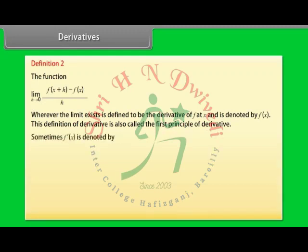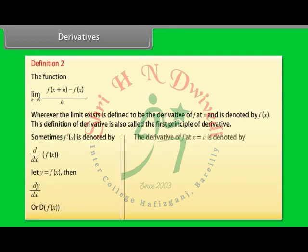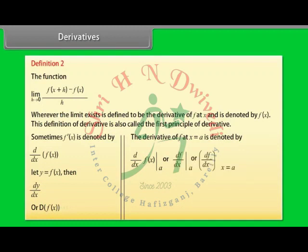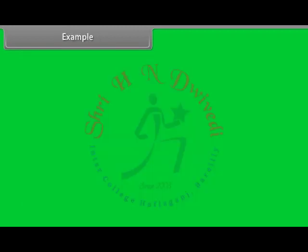Sometimes f′(x) is denoted by d/dx of f(x). Let y = f(x). Then d/dx of y, or D of f(x). The derivative of f at x = a is denoted by d/dx of f(x) at x = a.